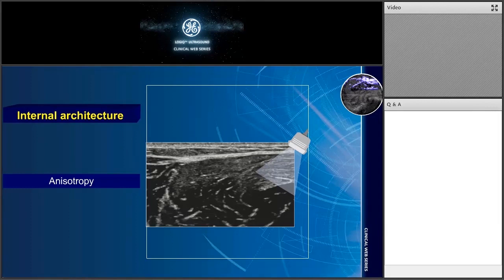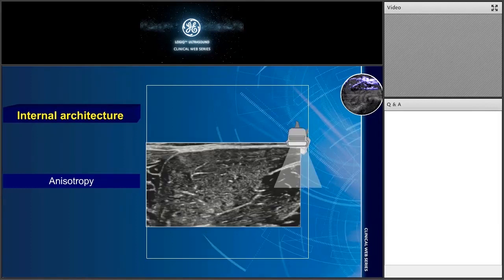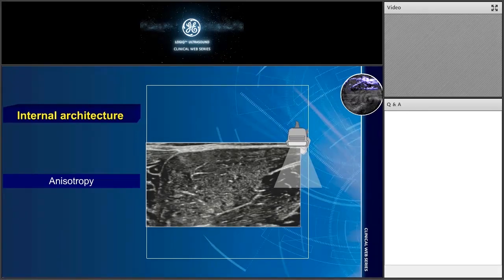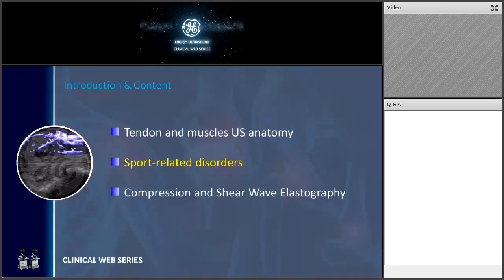Muscle can also suffer from anisotropy, so it is extremely important for anyone performing muscle ultrasound to orientate the probe several times and tilt it in order to find the right orientation and obtain a clear appearance of the muscle. This matters because mild tears at the level of the muscle may appear as just a focal area of hypoechoic muscle — given by increased fluid in the interstitial aspect of the muscle, which we call edema. So it is important to move the probe to avoid anisotropy.